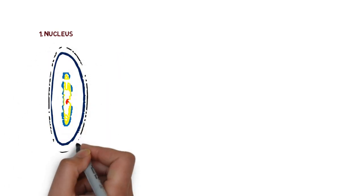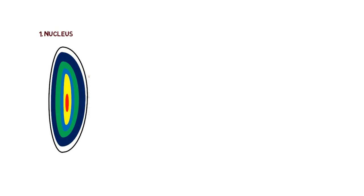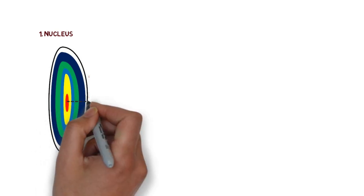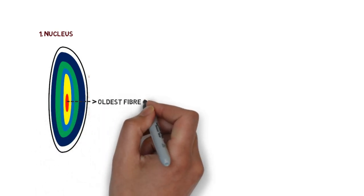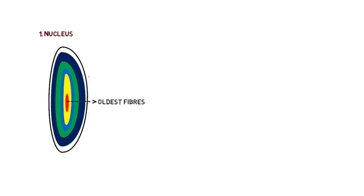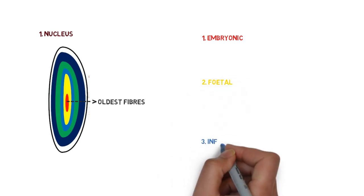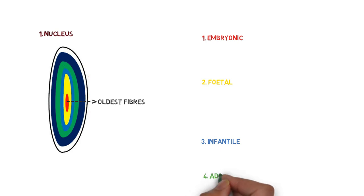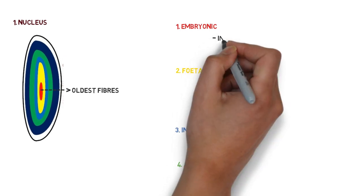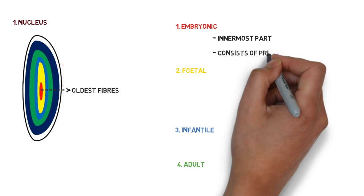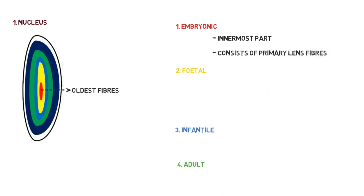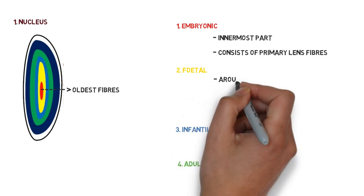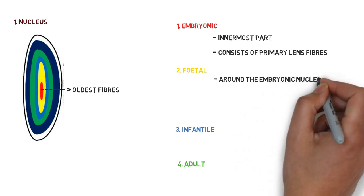First, we are going to study about nucleus. Nucleus consists of different zones, and at the central part there are oldest fibers present. So depending upon the period of development, the different zones of the lens nucleus include embryonic nucleus, fetal nucleus, infantile nucleus, and adult nucleus. Embryonic nucleus is the innermost part of the nucleus—it consists of primary lens fibers. The fetal nucleus lies around the embryonic nucleus.